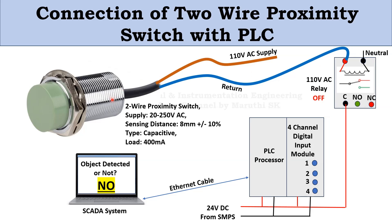We have connected the proximity switch to a relay. The brown wire is connected to the phase and the blue wire returns to the phase, both connected to a 110V DC relay coil. The relay has a common contact, normally open, and normally closed — black for common, green for normally open, and red for normally closed. The PLC processor is connected to a 4-channel digital input module. 24V DC is applied to both the PLC processor and the digital input module, and also extended to the common terminal of the relay.